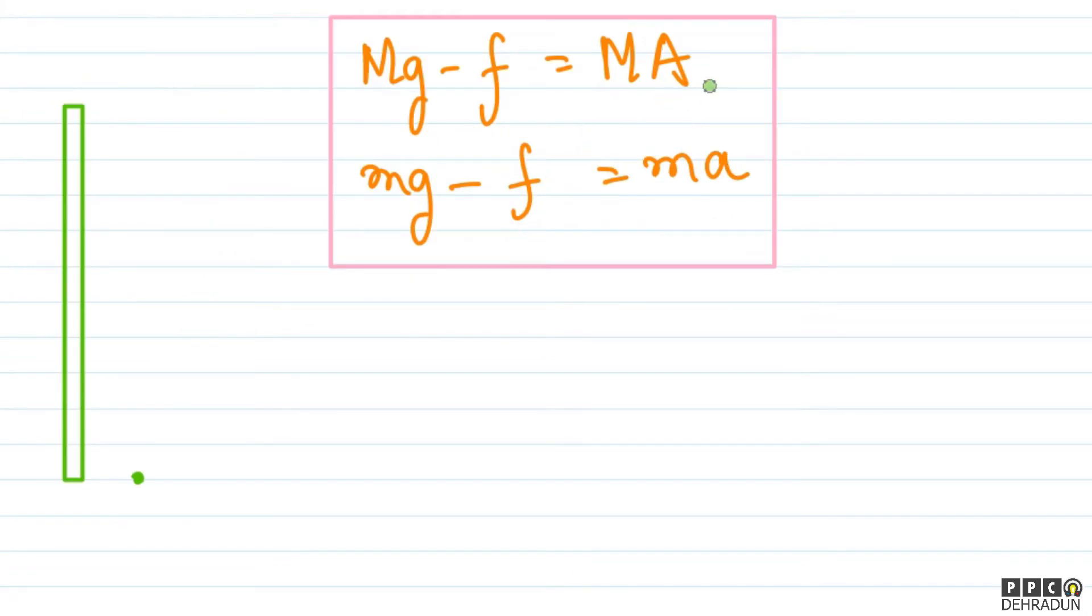But see, we have two equations, and see - one, two, and three - we have three unknowns. So see, the question also gives us that opposite this ball, initially the lower end of the rod is there. After some time, the upper end of the rod comes opposite this ball. So it is quite obvious that the rod's acceleration, which we assumed as capital A, will be greater as compared to the bead's acceleration small a.